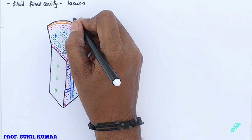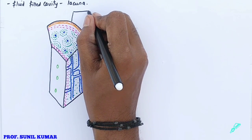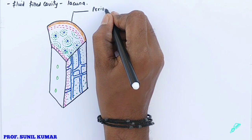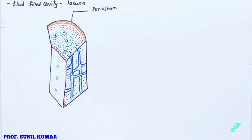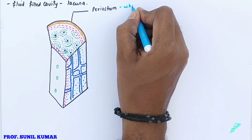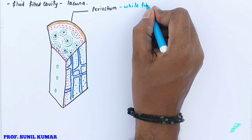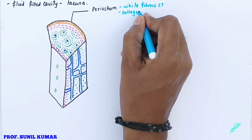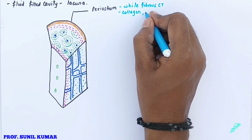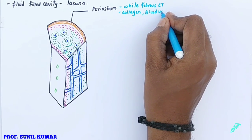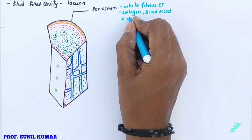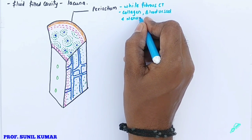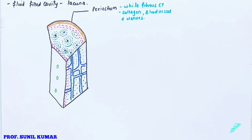For exam purposes, the first point to write is that the outermost covering of the bone is called the periosteum. The periosteum is white fibrous connective tissue — meaning it is made up of collagen, the most abundant protein in the human body — and it contains blood vessels and nerves.